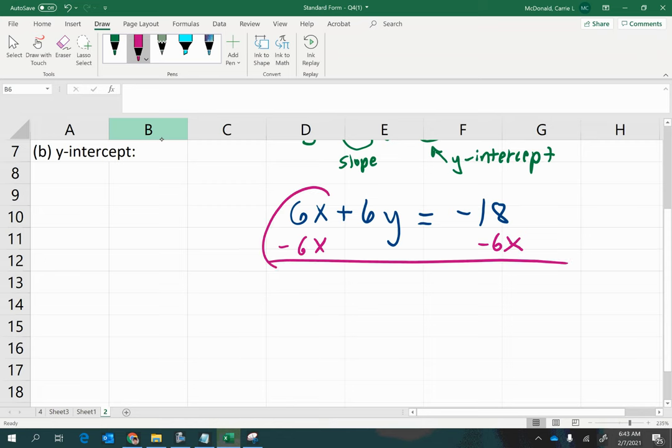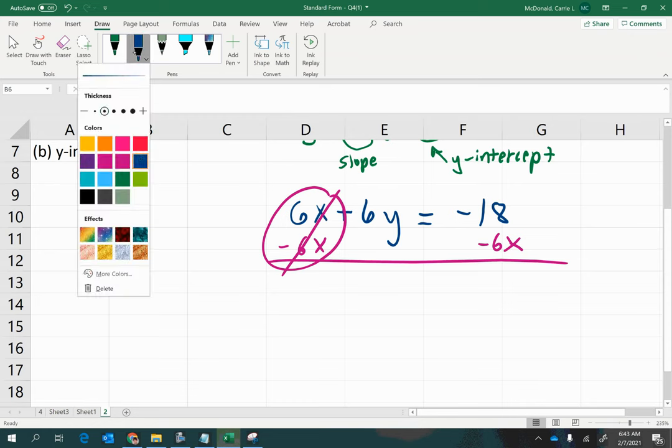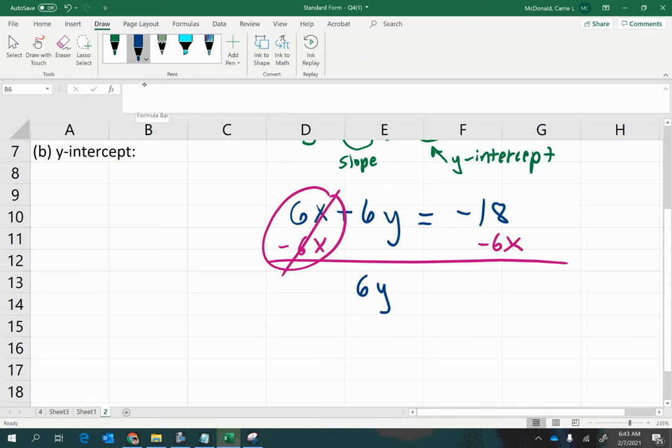That will zero out this part, and all you'll have left on the left side is positive 6y equals negative 6x minus 18.